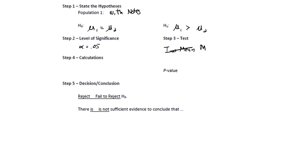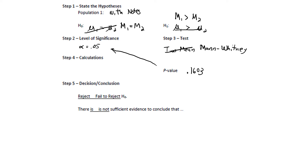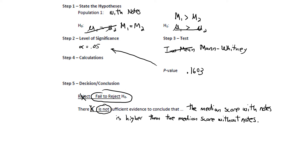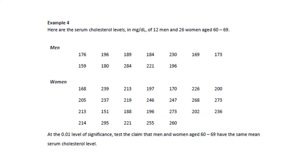The conditions failed, so the name of the test is Mann-Whitney — you can think of this as a two-median test. The null hypothesis is M1 equals M2, median 1 equals median 2. The alternate hypothesis is M1 is greater than M2. The p-value is 0.1603, which is not lower than 0.05, so we fail to reject the null hypothesis. There is not sufficient evidence to conclude that the median score with notes is higher than the median score without notes. Notice that I changed 'mean' to 'median' because this is a two-median test, not a two-mean test.